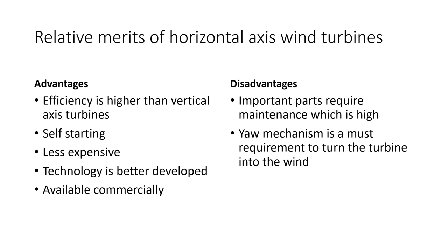The relative merits of horizontal axis wind turbines: the main advantages are that efficiency is higher than vertical axis turbines, they are self-starting, less expensive to install, and the technology is better developed through continuous research and readily available commercially. The main disadvantages are that important parts require very high maintenance and there is a requirement of a yaw mechanism to turn the turbine into the wind.